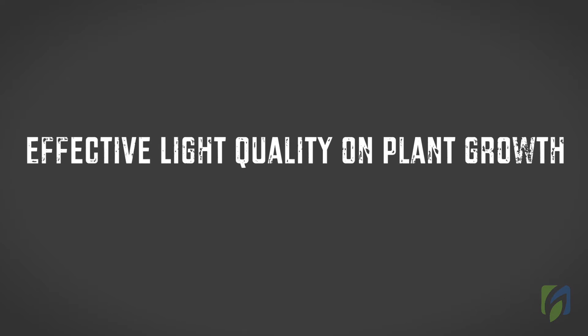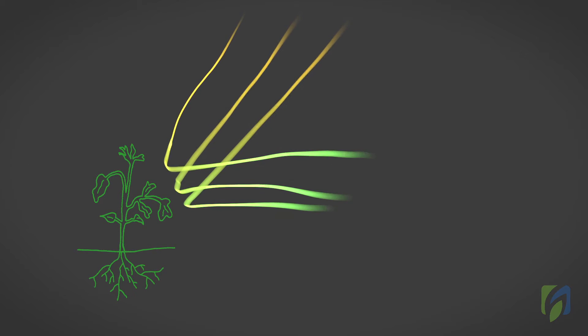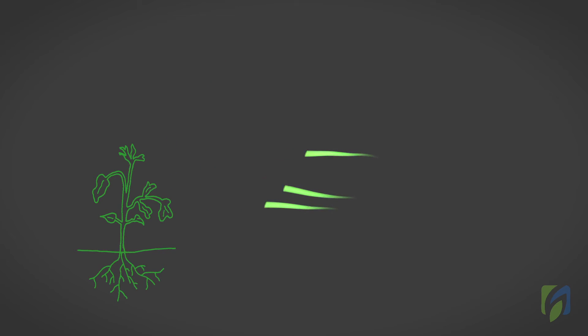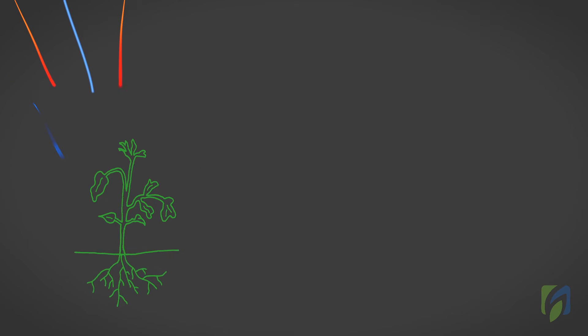Effect of light quality on plant growth: Plants appear green to us because they reflect, rather than absorb, green light. Red and blue light, which plants absorb, have the greatest effect on plant growth.